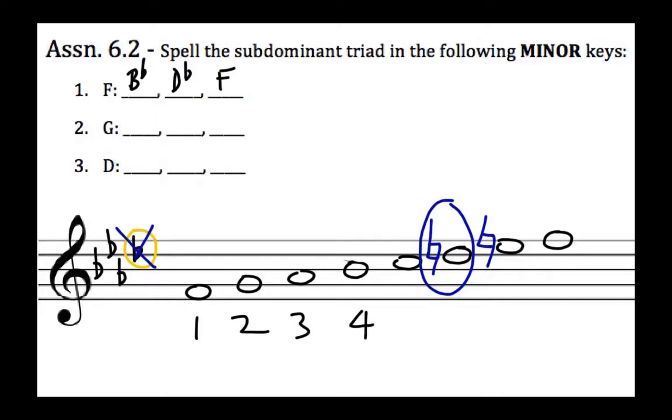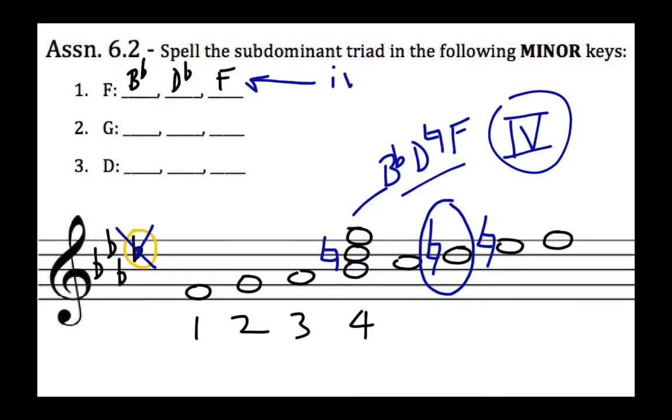When you go to spell your triad in melodic minor, you would end up with a B♭, D natural, F, or a major triad. So in a sense, the subdominant chord with a Roman numeral IV would be major, rather than the subdominant chord being a lowercase Roman numeral iv minor, like it normally would.